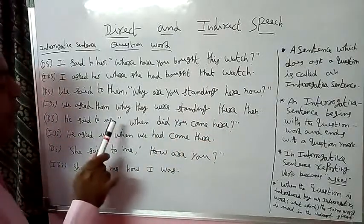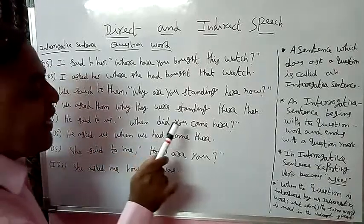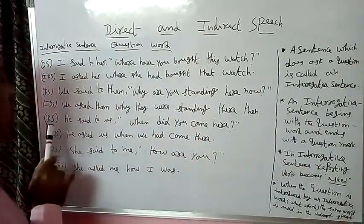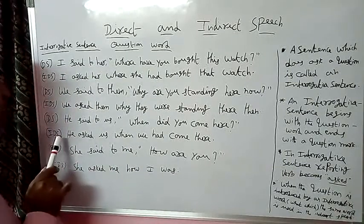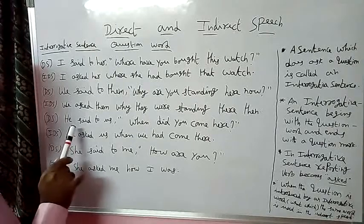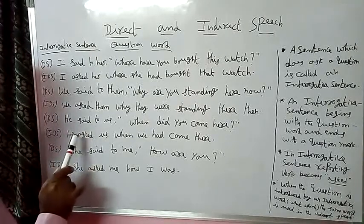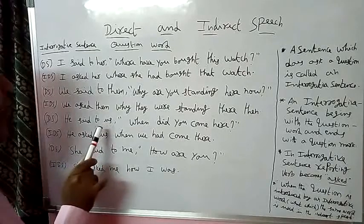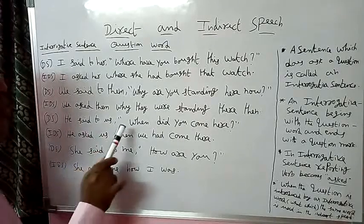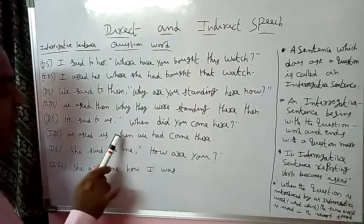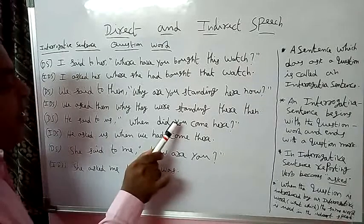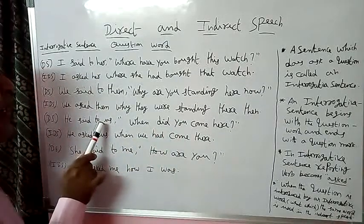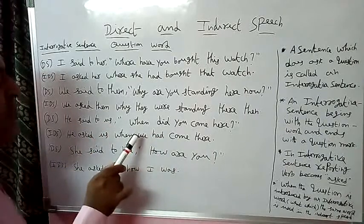Next example: He said to us, 'When did you come here?' Here in direct speech the subject is 'he', and the same subject we must write in indirect speech. The reporting verb 'said to' becomes 'asked'. The object is 'us', and the same object we must write. The question word is 'when', and the same question word is used instead of a comma. The pronoun 'you' is changed according to the object — object is 'us', so subject is 'we', and 'you' is changed to 'we'.